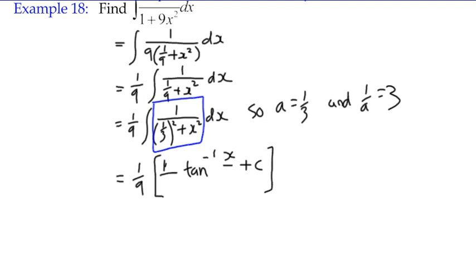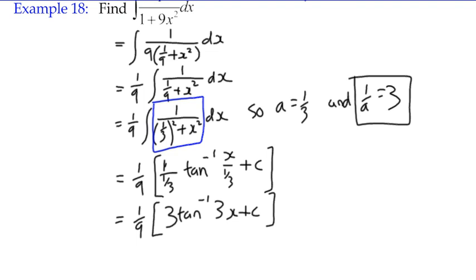We know that a is 1/3, so effectively you've got that going on, and that's why I was saying 1/a. We could actually simplify it by just knowing ahead of time that we're going to write a 3. So it's 1/9 of 3 times the inverse tan of 3x + c.